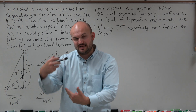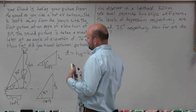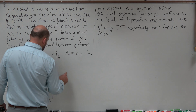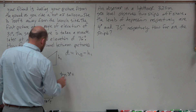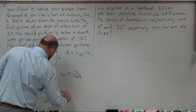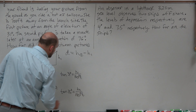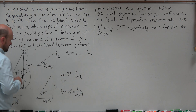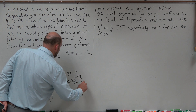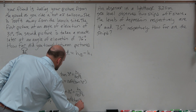We have an angle and a side of each triangle — that's enough information to figure out the height. We need to determine which trigonometric function to use for the opposite and adjacent sides, and that is tangent. So for the first triangle: tangent of 31 degrees equals h1 over 100 feet. For the second: tangent of 76 degrees equals h2 over 100 feet. Therefore, h1 equals 100 feet times tangent of 31 degrees, and h2 equals 100 feet times tangent of 76 degrees.